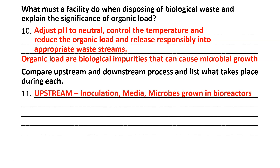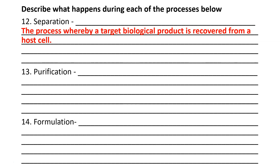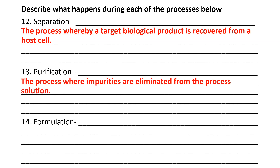Upstream processes include inoculation, where viruses or bacteria — whatever you're dealing with — are introduced to media. Media is the growth food that these organisms will be grown in. These microbes are grown in the bioreactors, and they produce our product. Once they have produced our product, we have downstream processing. Downstream processing filters the product out and recovers it in various ways. One way is separation, where the target biological product is recovered from the host cell. Purification allows us to get rid of any impurities — the things we don't want.